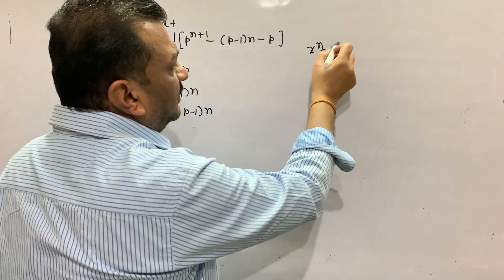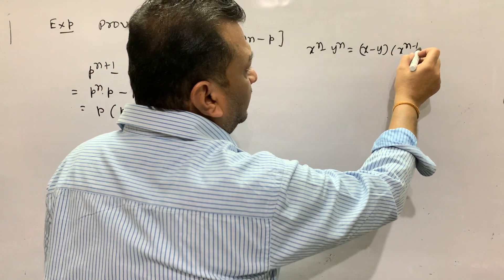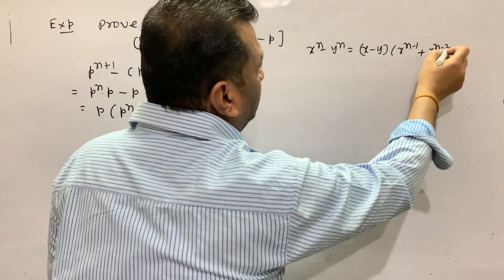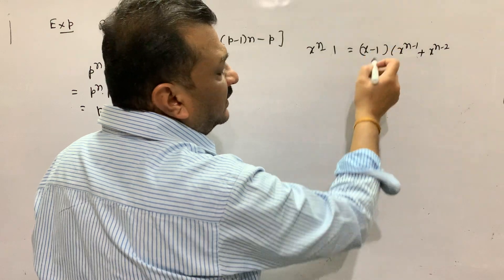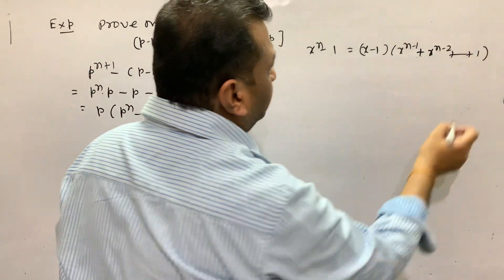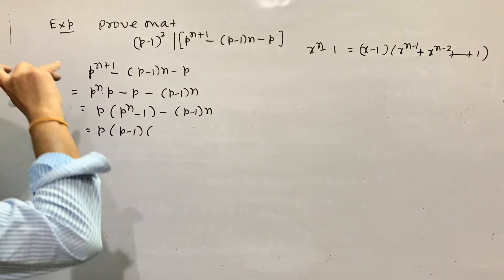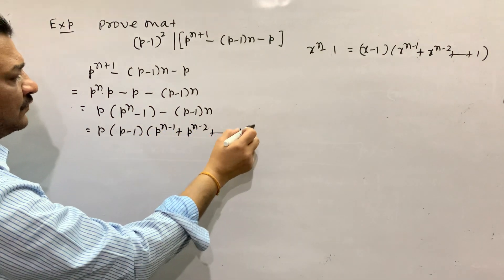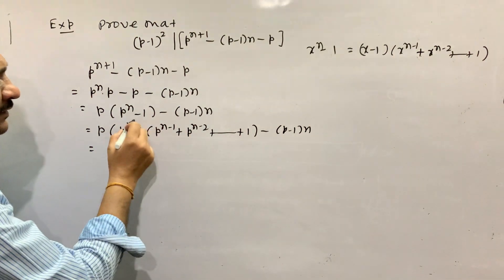We know the identity: x to the power n minus y to the power n equals (x minus y) times (x to the power n minus 1, plus x to the power n minus 2, and so on). So applying this, we write (x minus 1) times (x to the power n minus 1, plus x to the power n minus 2). Applying to our problem: p to the power n minus 1, plus p to the power n minus 2, and so on, minus (p minus 1), giving us power n minus 1.